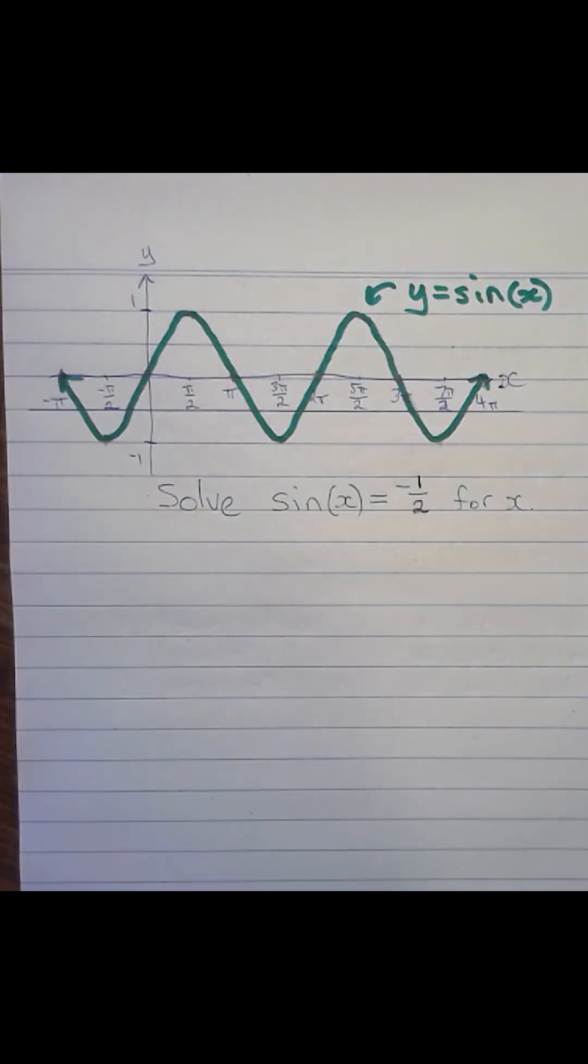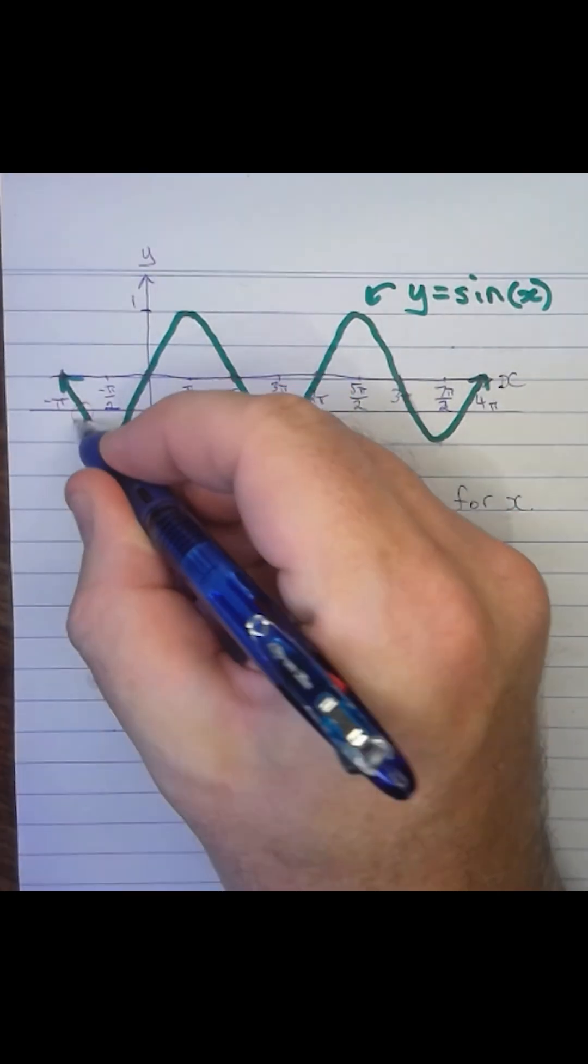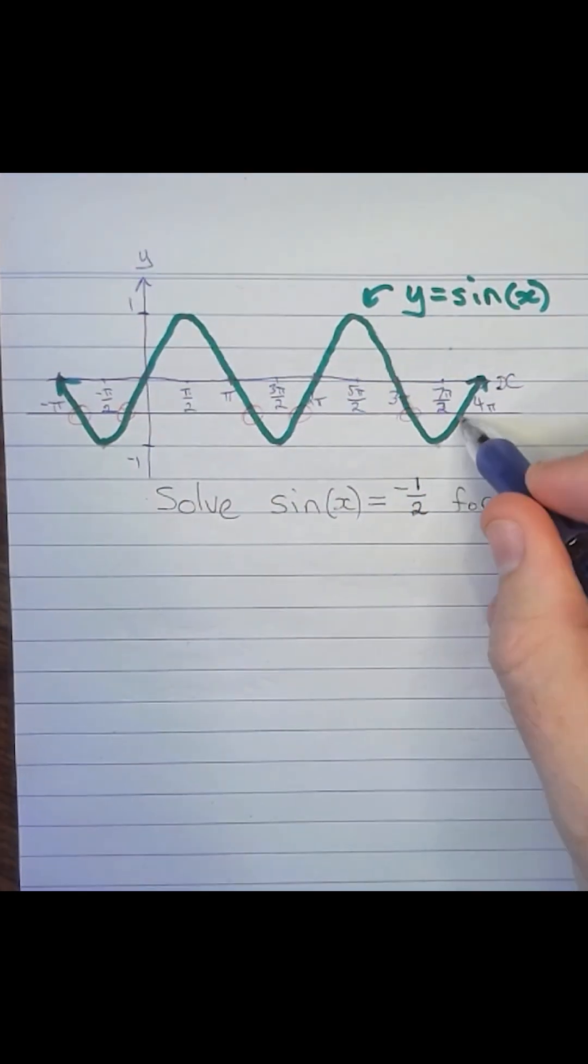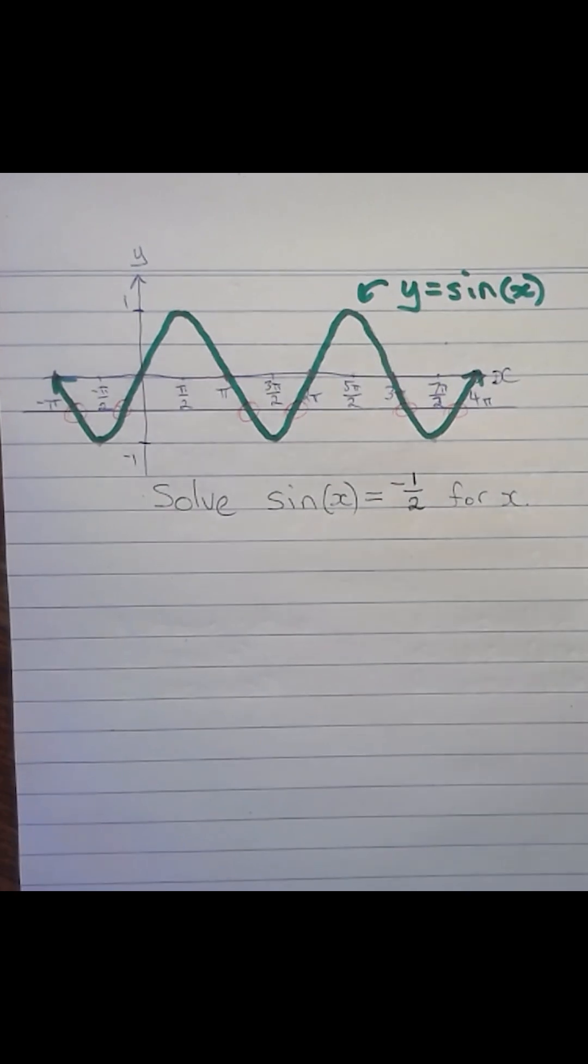where we've only got part of the whole sine of x curve, there's quite a number already of places where the curve, the green one, cuts the line y equal to minus a half.